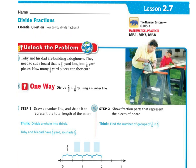Let's unlock the problem. Toby and his dad are building a doghouse. They need to cut a board that is two thirds yard long into one sixth yard pieces. How many one sixth yard pieces can they cut?